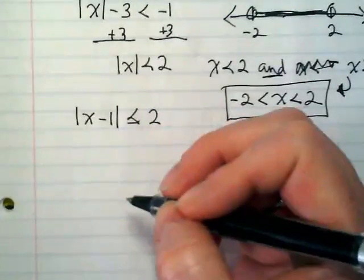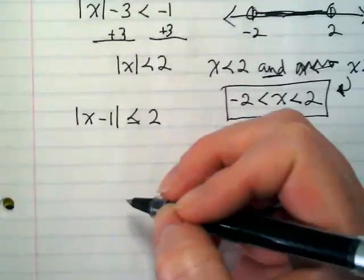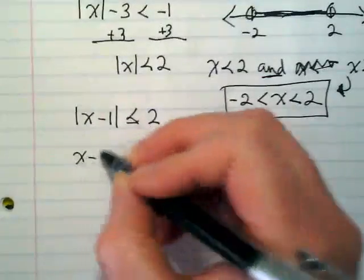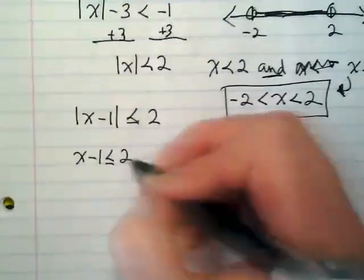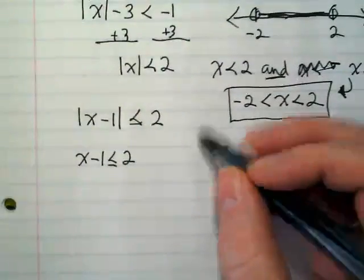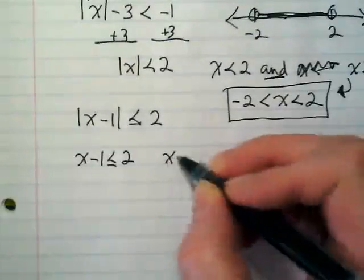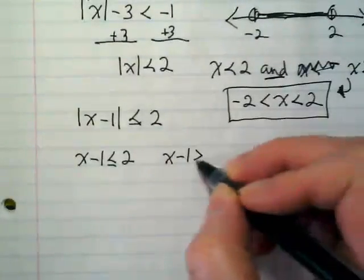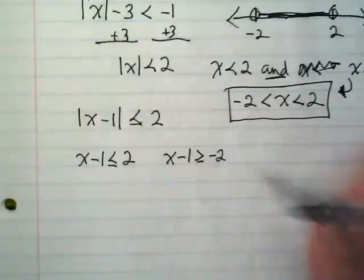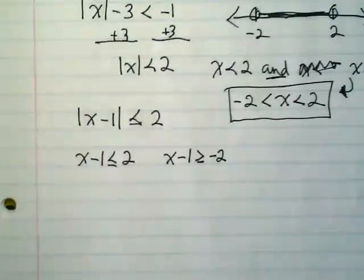What happens with this? We're going to set this up as two different versions, right? x minus 1 is less than or equal to 2, and what's the other one? Negative 2. But what do you think is going to happen to the symbol? Flip. Yeah, because I'm basically taking the answer and multiplying it by negative 1 to get it to be a negative, and when I do that I have to flip my symbol.